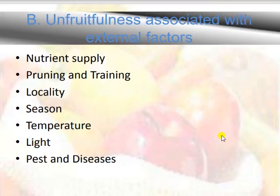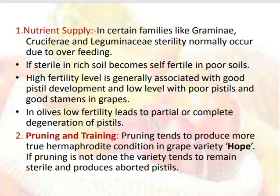Unfruitfulness associated with external factors includes nutrient supply, pruning and training, locality, season, temperature, light, and pests and diseases. Regarding nutrient supply, in certain families like Gramineae, Cruciferae, and Leguminosae, sterility normally occurs due to overfeeding. If a sterile plant in rich soil becomes self-fertile in poor soil. High fertility level is generally associated with good pistil development, while a low level is associated with poor pistils and good stamens in grapes. In olives, low fertility leads to partial or complete degeneration of pistils.